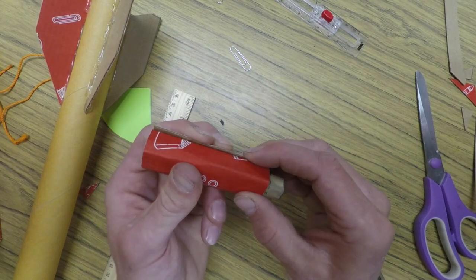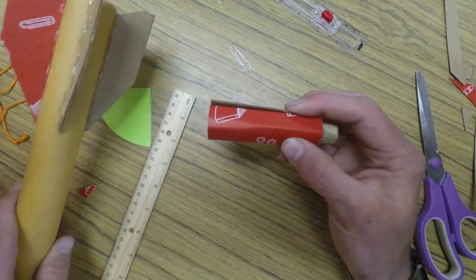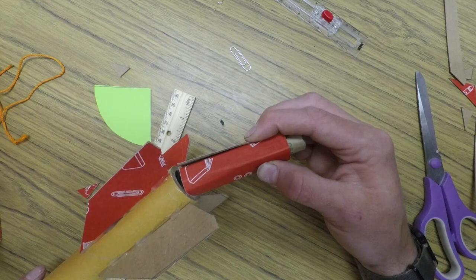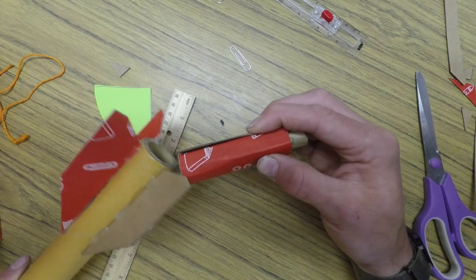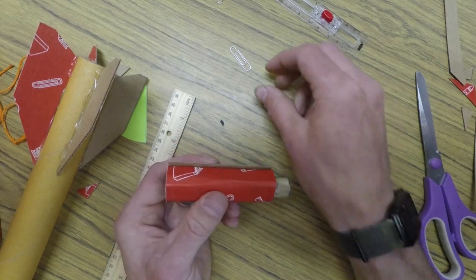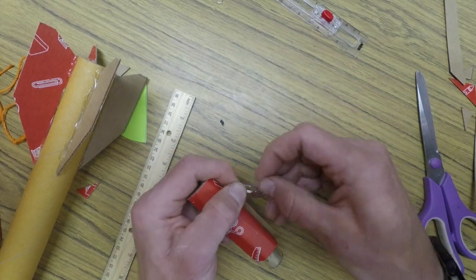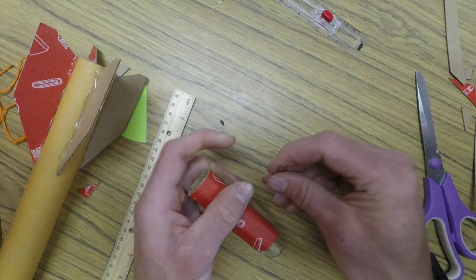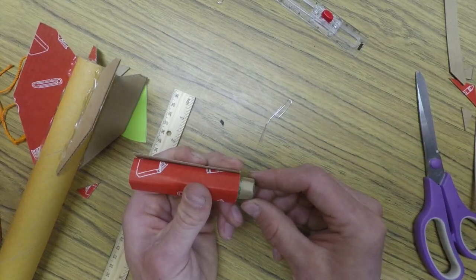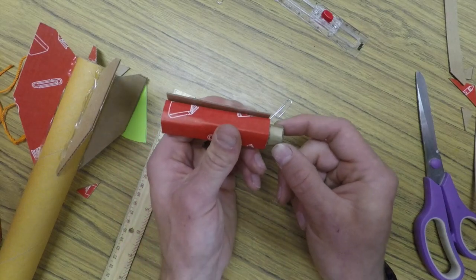Once I have it the size that I need to fit into my rocket body, my main tube, then I can glue and tape it so it stays. But then I'm also going to use a paper clip and undo the paper clip. I'm going to stick the paper clip through the cardboard.